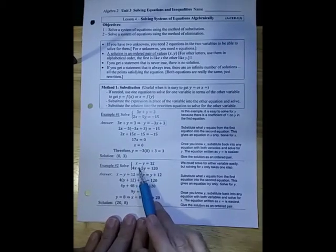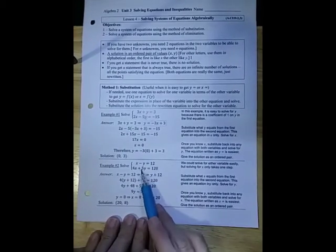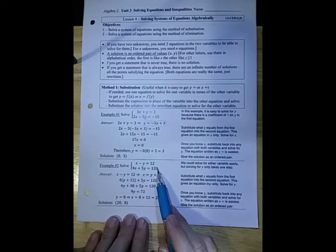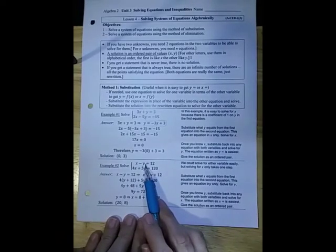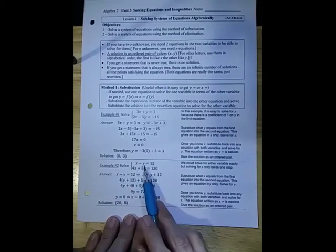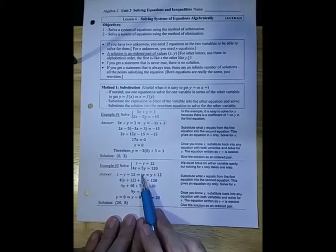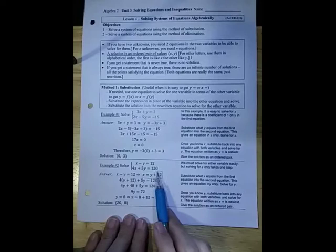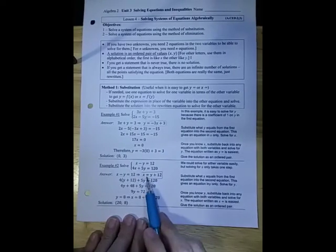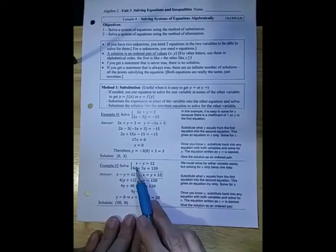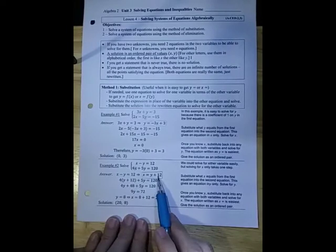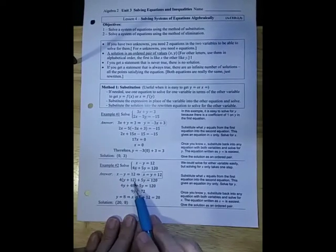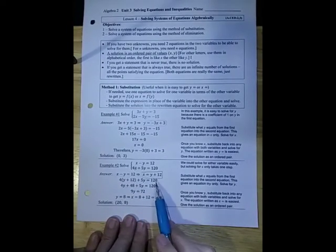For this one, we have x minus y is equal to 12, 4x plus 5y is 120. We could actually rewrite in terms of either variable. I'm going to choose the x. I will add the y to both sides and get x is y plus 12. Then in this equation, I can, instead of that x, I can substitute y plus 12.